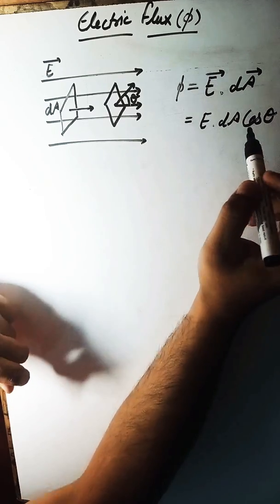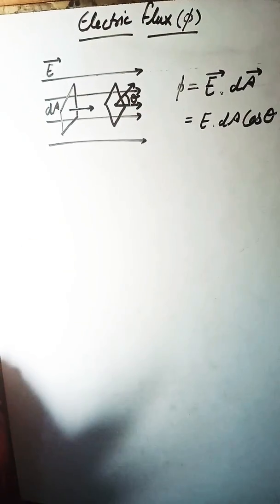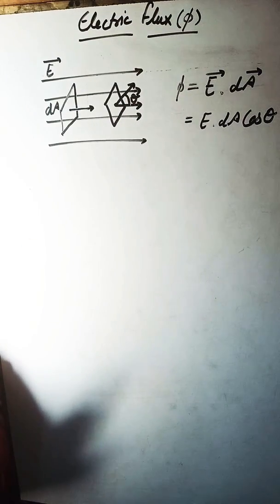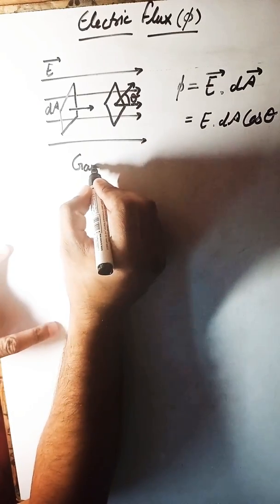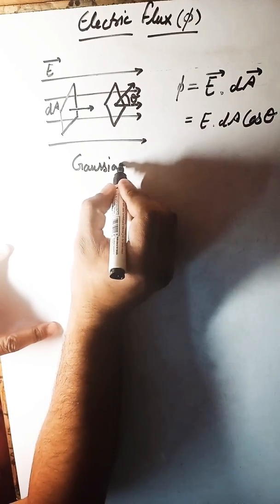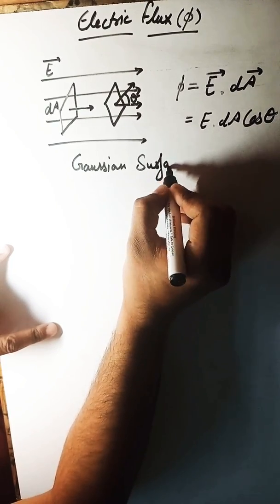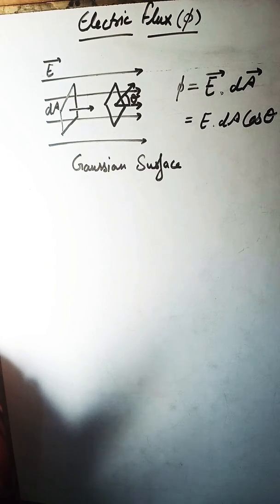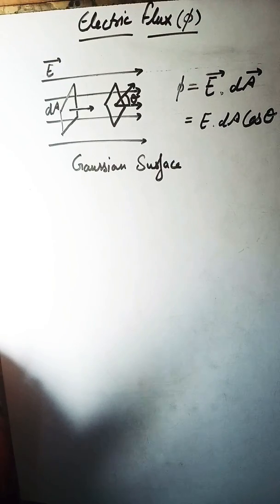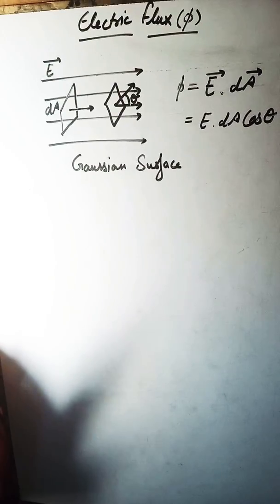We will now study the Gaussian surface before we start Gauss's law. A Gaussian surface is a surface which has the same electric field intensity at all points and covers every electric field line possible.